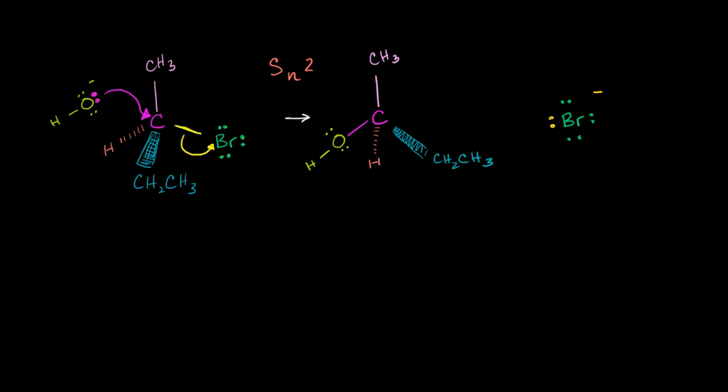So let's name this thing right over here. If we start counting at this carbon, one, two, three, four. Four carbon backbone. It is all single bonds. This is a butane. And then it has a bromine at the number two carbon. So this is 2-bromobutane.